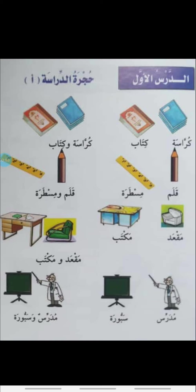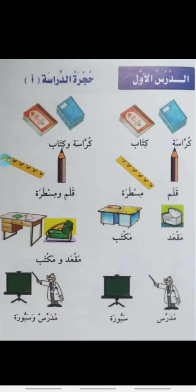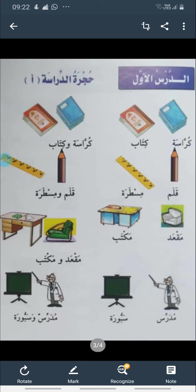Review: Hujratun — study room. Kurrasatun — notebook. Kitabun — textbook. Kalamun — pen. Mishtaratun — scale. Kalamun wa mishtaratun — pen and scale. Maktabdun — sofa. Maktabun — table. Mudarrisun — teacher. Sabburatun — blackboard. Mudarrisun wa sabburatun — teacher and blackboard. Jazakallah students.